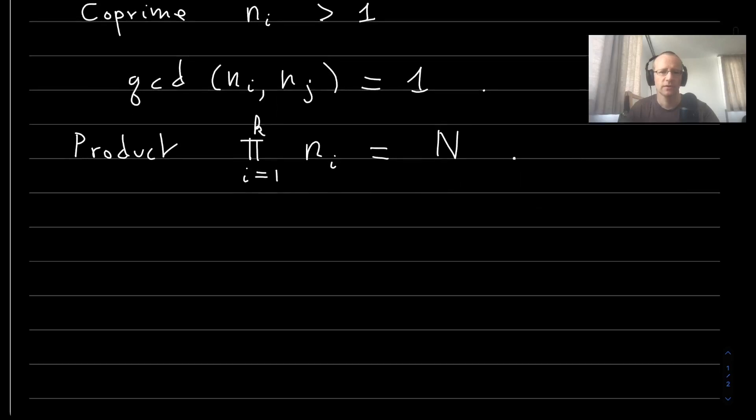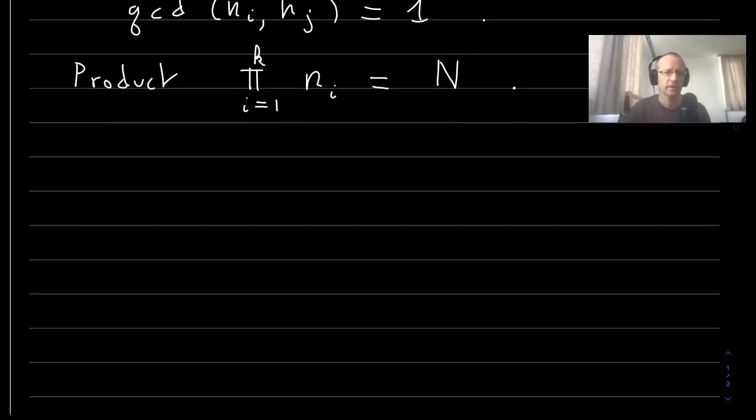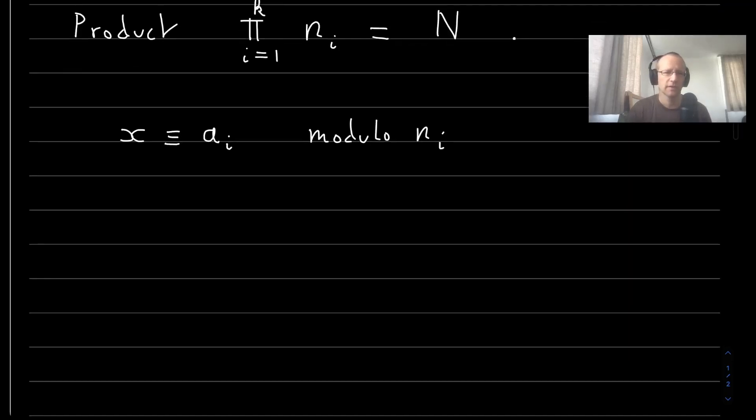Now we have the following Chinese remainder theorem. It says that if x is equal to a_i modulo n_i for all i, then x has a unique solution.